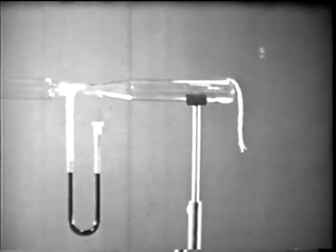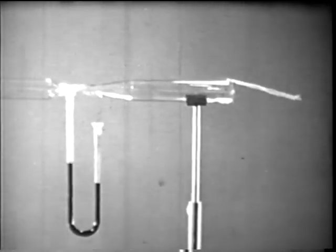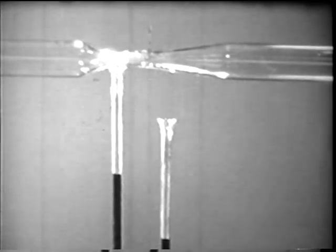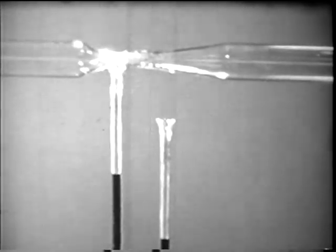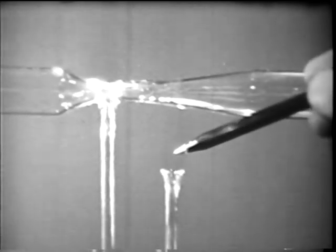Air behaves in a similar way. If we connect the venturi tube to an air cylinder, the air speeds through the venturi and its side pressure becomes much less than atmospheric pressure. The water rises in the U tube, pressed up by atmospheric pressure outside the tube.